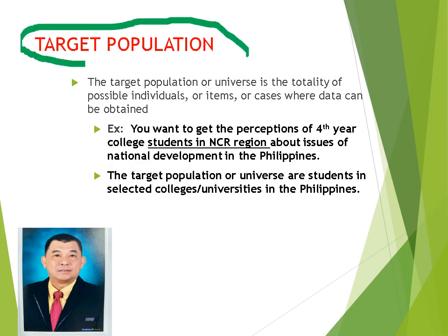Let's discuss first what is target population. The population or target population or universe is where our respondents can be seen or are located. So target population or the universe is the totality of possible individuals, items, or cases where data can be obtained. Example: you want to get the perceptions of fourth year college students in National Capital Region about issues of national development in the Philippines. So who is the target population? The target population or universe are students in selected colleges, universities in the Philippines.